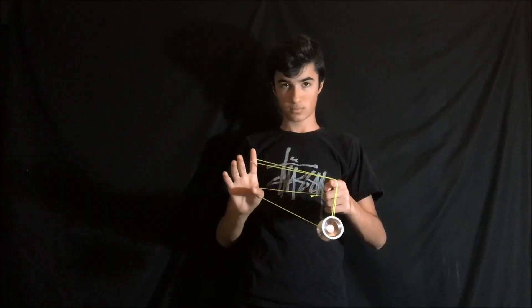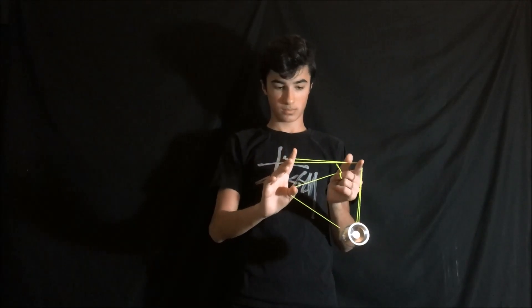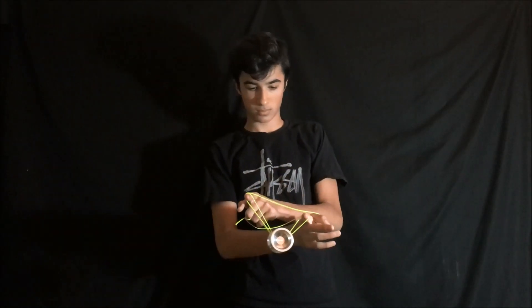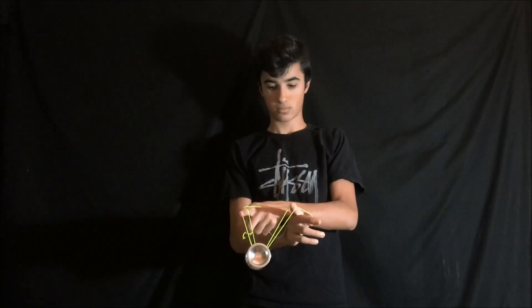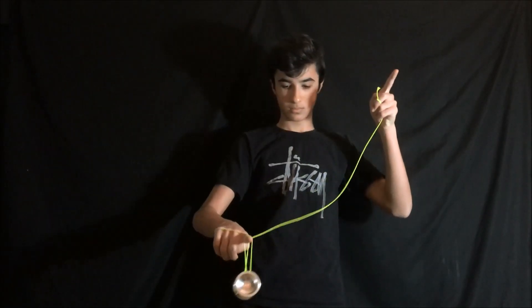Now bring the loop around your non-dominant hand's pointer finger under the yo-yo. Then drop the loop and swing the string into a hook like so.